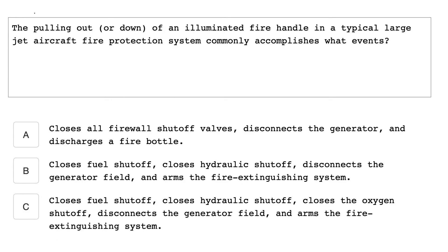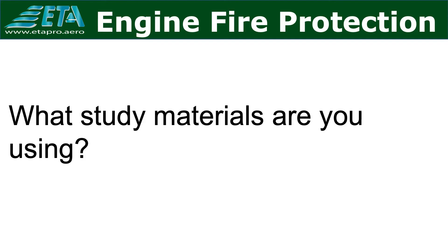The pulling out or down of an illuminated fire handle in a typical large jet aircraft fire protection system commonly accomplishes what events? It closes the fuel shutoff, closes the hydraulic shutoff, disconnects the generator field, and arms the fire extinguishing system.